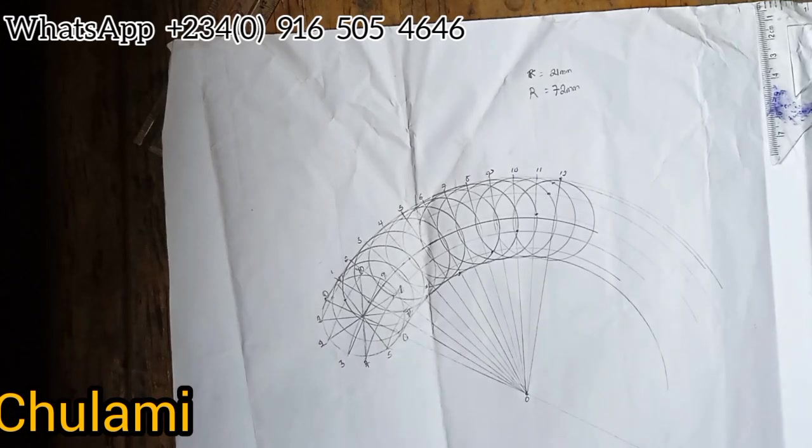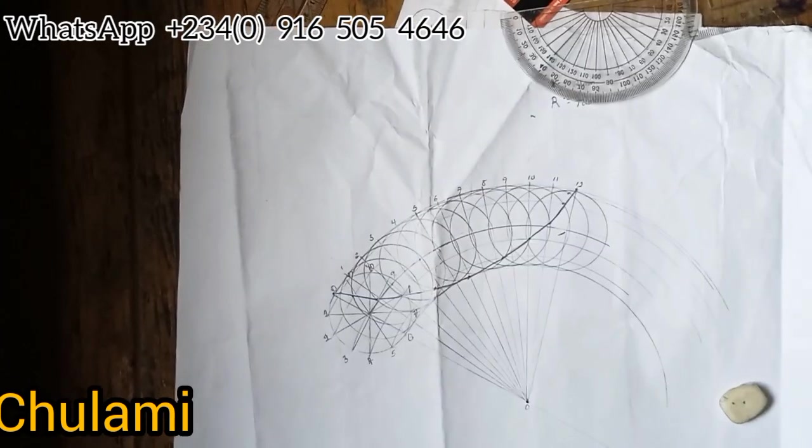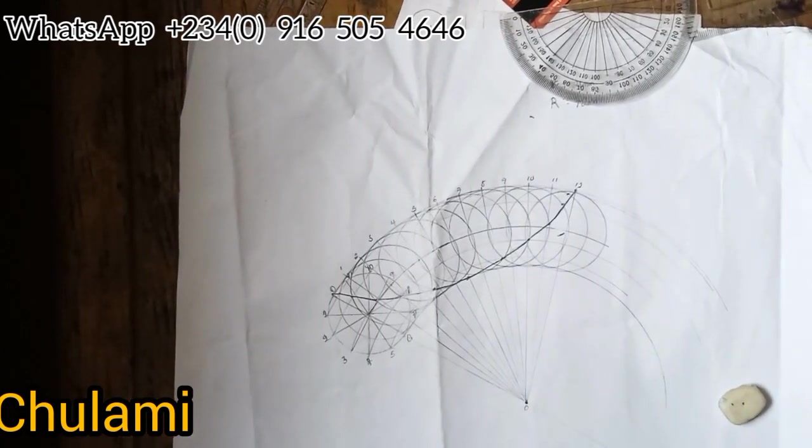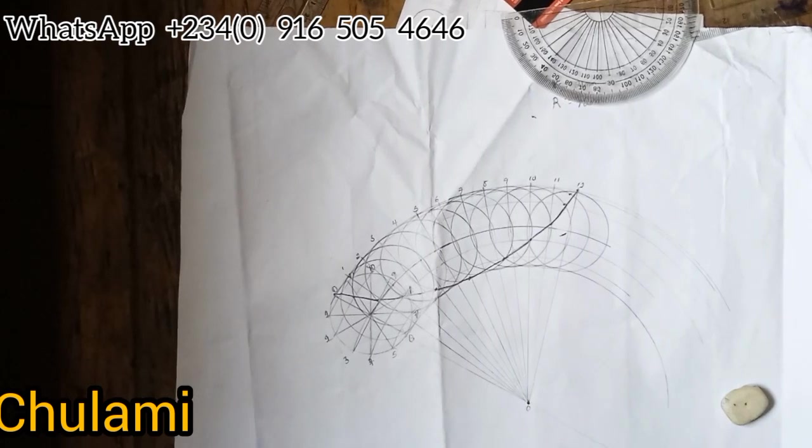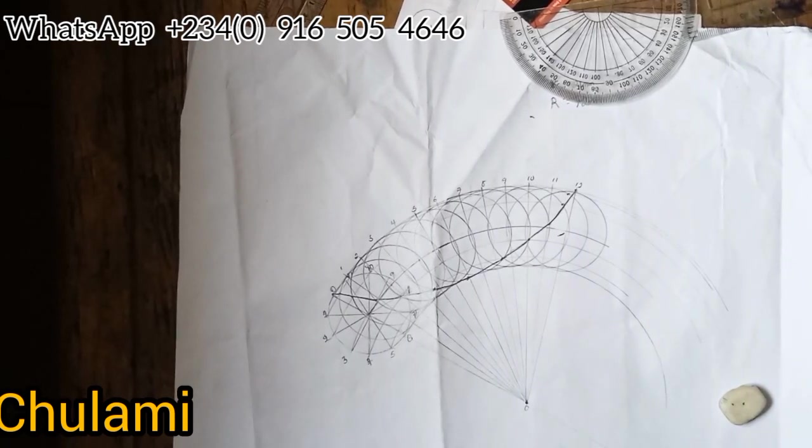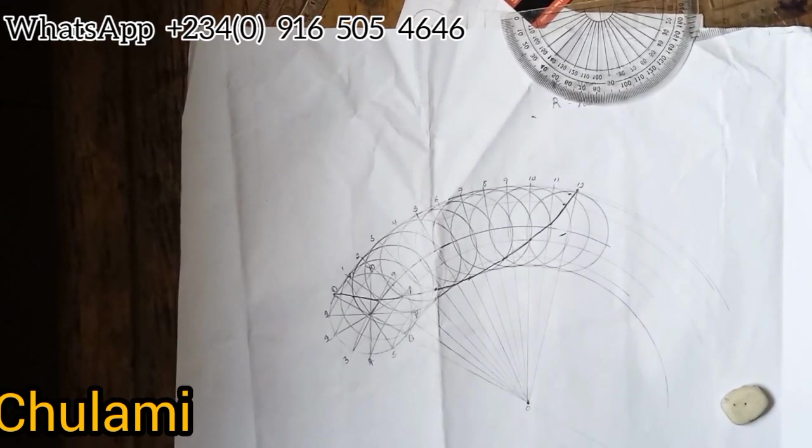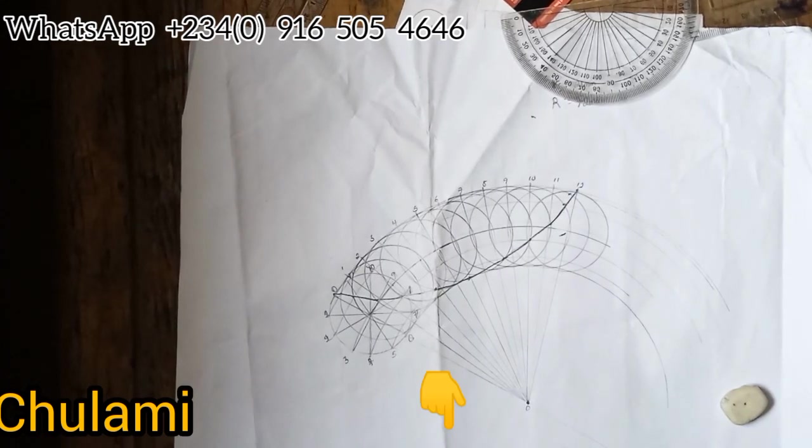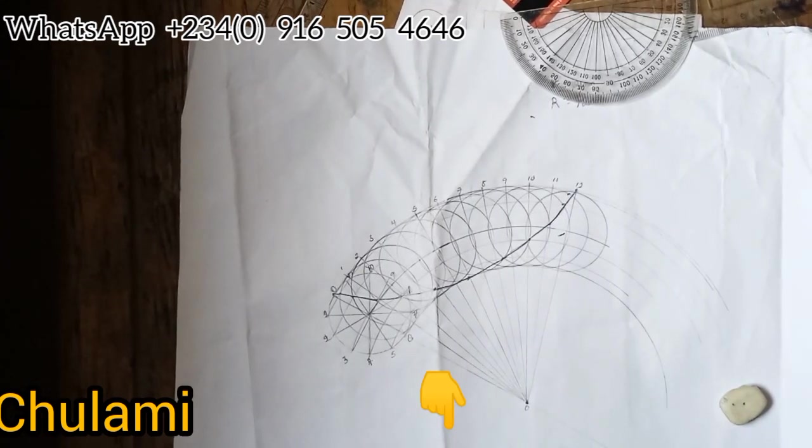Now after getting these points, with a neat fine French curve you will join all these points. This is how it should look like after drawing the locus. If you want to draw epicycloid, which is the opposite of hypocycloid, please check out the description part of this video. You will see a link on how you can draw an epicycloid.